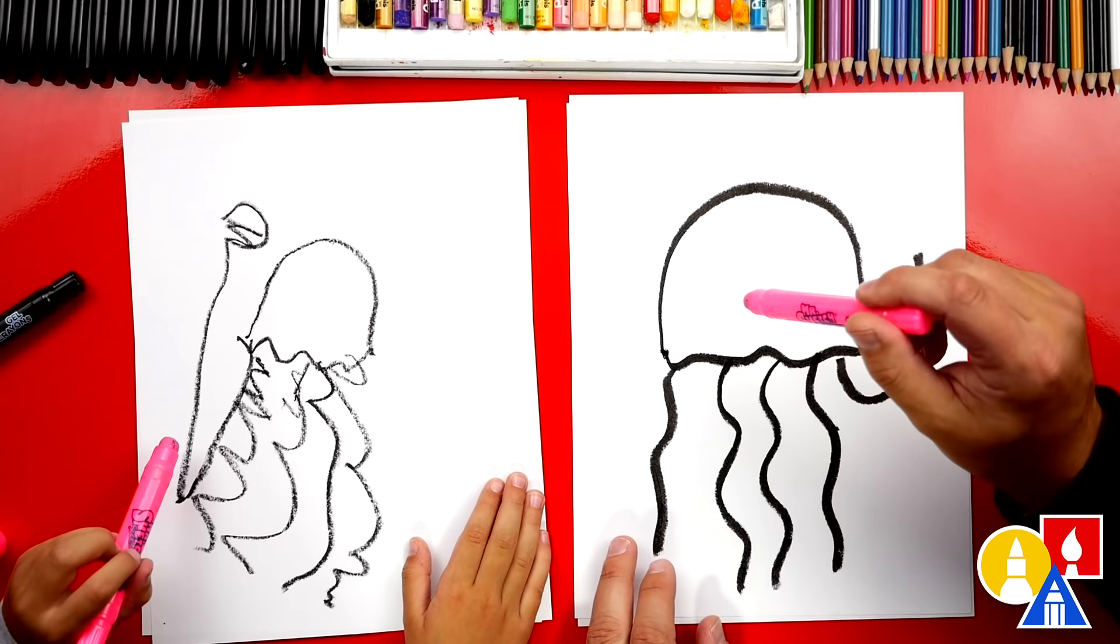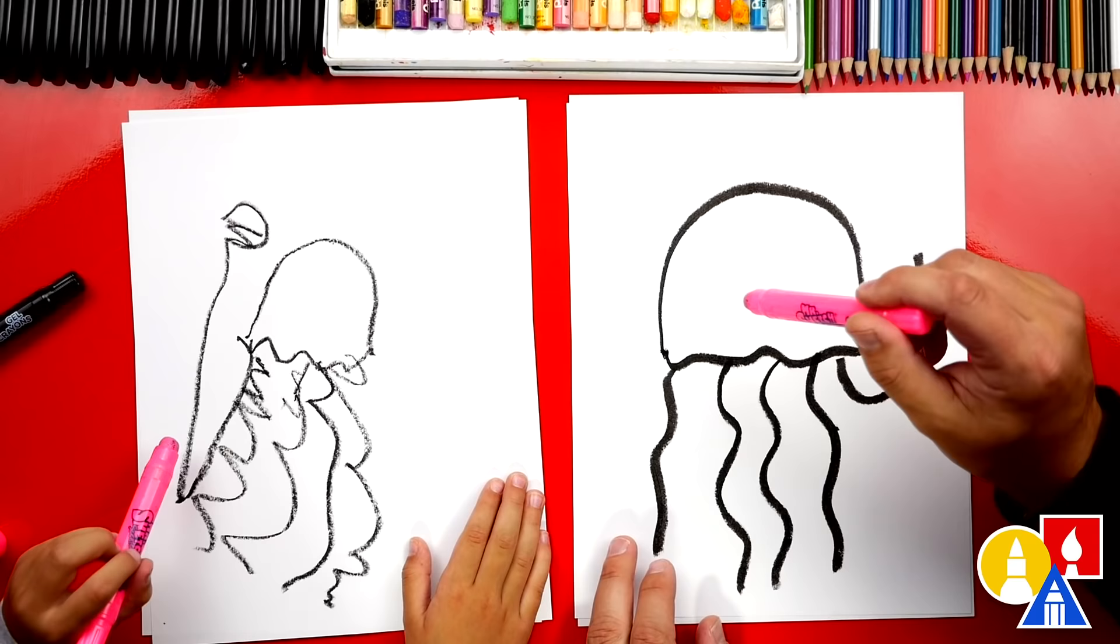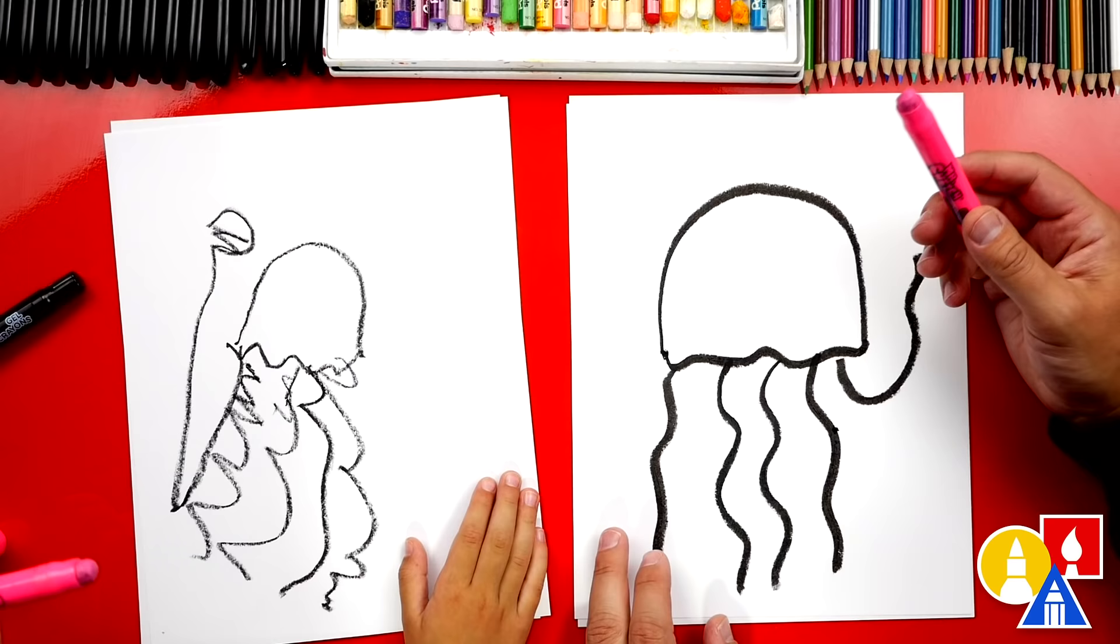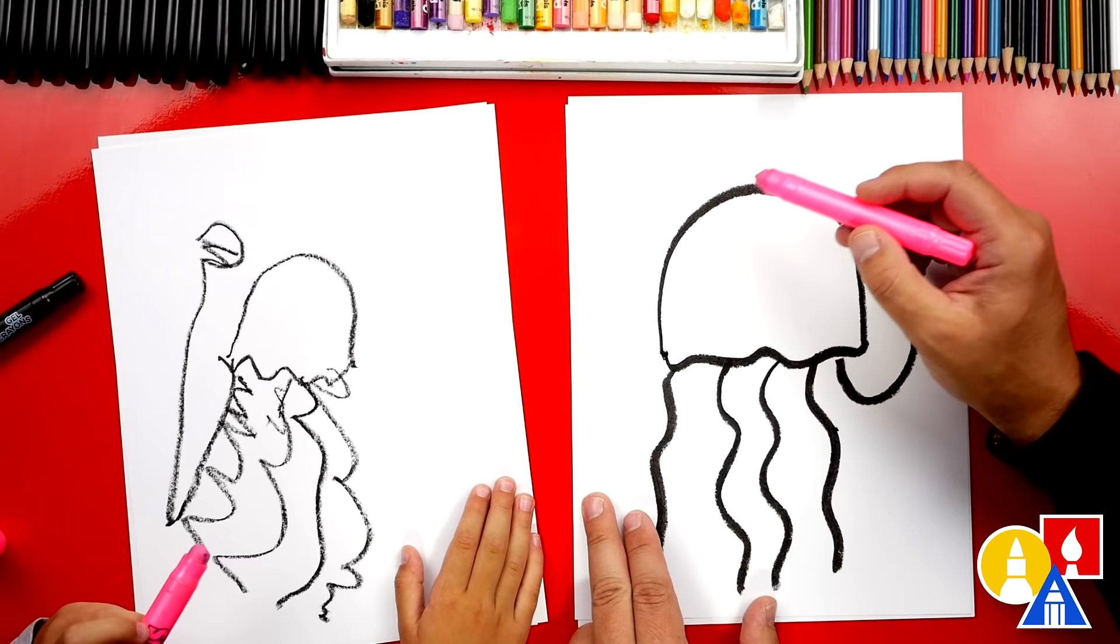We're going to switch to our pink crayon and color in our jellyfish. Or you could use a different color. You could color it blue or green or rainbow. You could color rainbow too, all different colors. This part we're going to fast forward, but you can pause the video to match our same color.